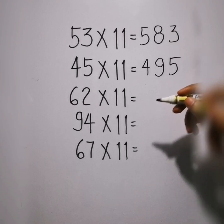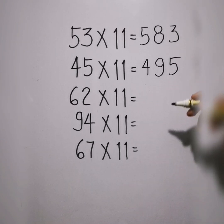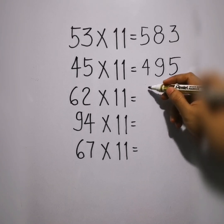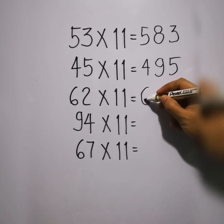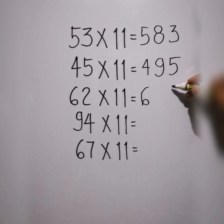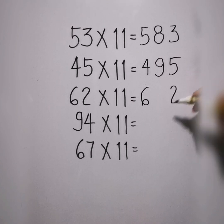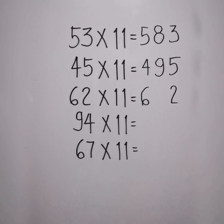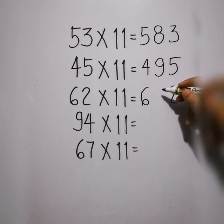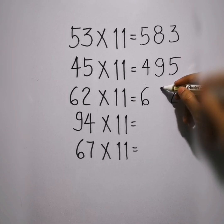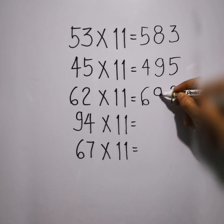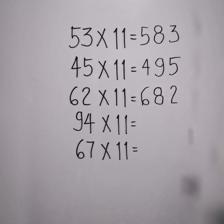Next example, we have 62 times 11. So we'll write 6, put a space in between, write 2. Add them both: 6 plus 2 is 8. Put 8 in between. Very easy, right?